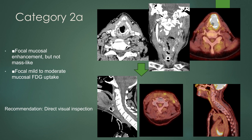This patient had a laryngeal cancer with very avid uptake on PET scan, seen here on the coronal image. Status post-laryngectomy, the patient has some linear uptake on FDG PET, but really no mass-like enhancement on the contrast-enhanced CT scan. This would be a Category 2A, with the recommendation to examine the surgical site.